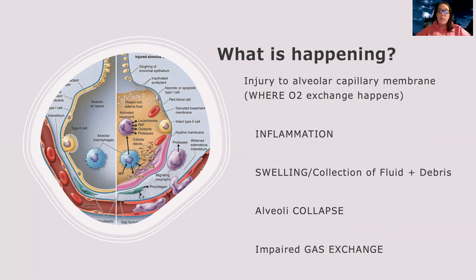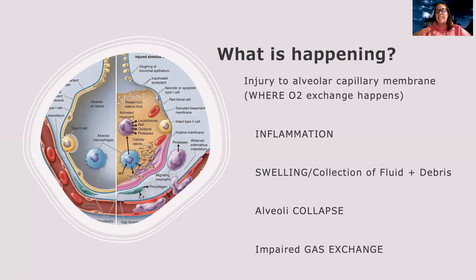They're trying to open the doors to let all the defenses in because there's inflammation — something's not good, so they send everyone in to fix it. Because that inflammation starts happening, your capillaries become more permeable — the doors open. That allows fluid shifts to happen and a bunch of debris and particles build up, eventually causing the alveoli to collapse.